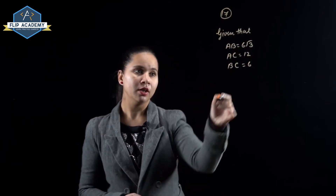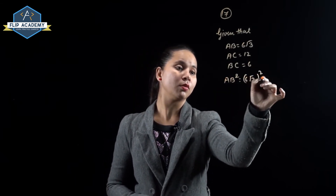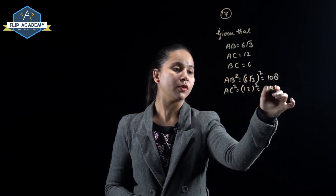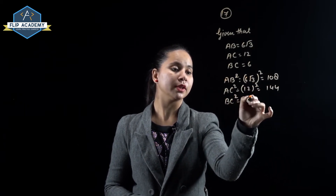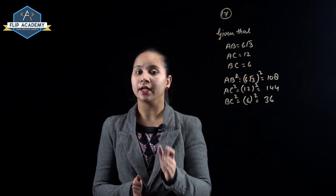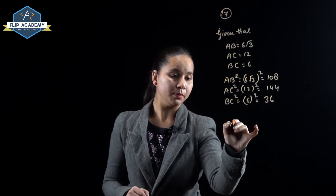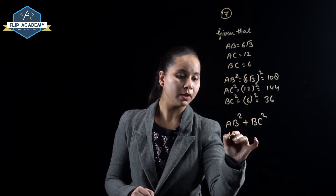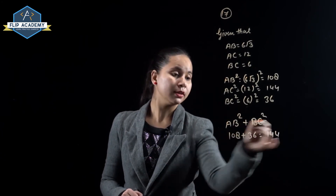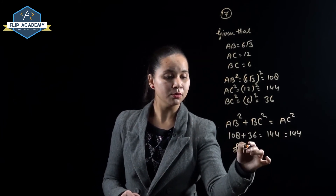We need to check the value of angle B. AB² equals (6√3)² equals 108. AC² equals 12² equals 144. BC² equals 6² equals 36. The rule is that in any triangle, the sum of squares of the two smaller sides should equal the square of the third side. The smaller sides are AB and BC, so AB² plus BC² equals 108 plus 36 equals 144, which equals AC².